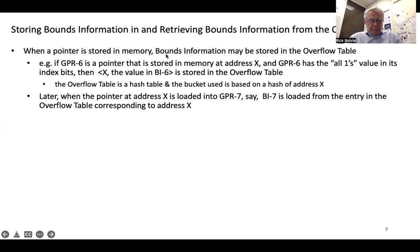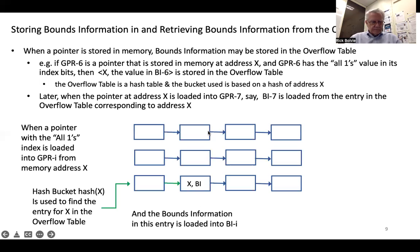When a pointer is stored in memory, bounds information may have to be stored in the overflow table. For example, if GPR 6 is a pointer stored in memory at address X and GPR 6 has the all-ones value in its index bits, then the values of X and the value in BI 6 are stored in the overflow table. The overflow table is a hash table and the bucket used is based on a hash of address X. Later, when the pointer at address X is loaded into GPR 7, BI 7 will be loaded from the overflow table entry corresponding to address X.